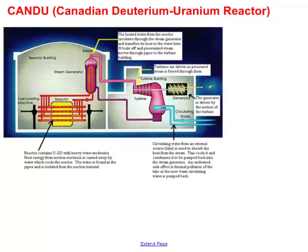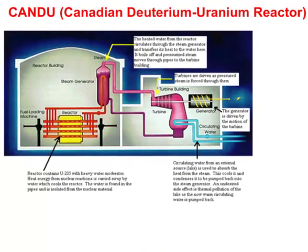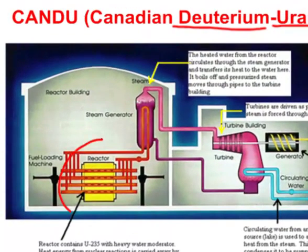Canada is famous for its CANDU reactors — short for Canadian Deuterium Uranium Reactor. Uranium is the radioactive element used to create power, and deuterium is a type of hydrogen found in heavy water, used to control the reactor. Inside the reactor vessel, tiny pellets of uranium undergo fission — large uranium atoms break down into smaller pieces like neutrons.